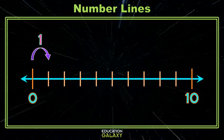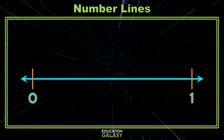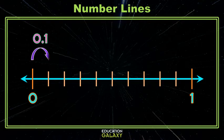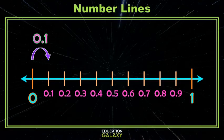So when I go from 0 to 1, and I break that into 10 equal parts, do you remember what each one of those parts is called? It's a tenth. So that makes that first tick mark 1 tenth, the next tick mark 2 tenths, next tick mark 3 tenths, next tick mark 4 tenths, and so on.